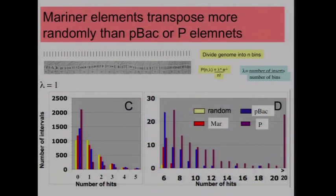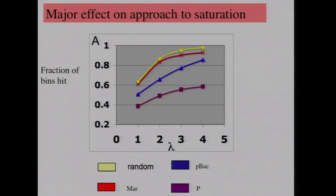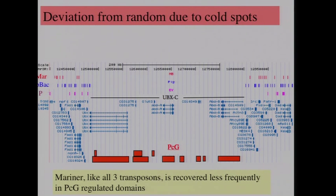One characteristic of this element is it's really random in its transposition throughout the genome. If you divide the genome into bins and take lambda equals one — say 4,000 bins with 4,000 insertions — a pure Poisson distribution would suggest equal numbers of zero and one-hit bins. The Mariner class element is very, very close to that Poisson distribution. By contrast, piggyBac and P elements are very different, with many more unhit bins and many more bins with multiple hits, showing their nonrandomness. So Mariner is a really random transposon — if you're trying to saturate all bins, it's a very good choice.